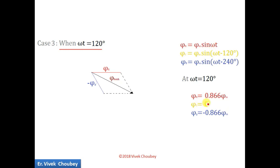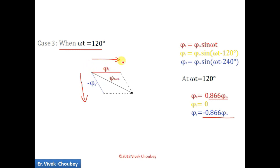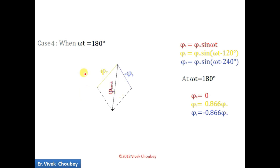Now at ωt = 120°: φR = 0.866φm, so φR is positive in its direction. φY = 0, so it does not appear. φB = −0.866φm — putting ωt = 120° gives φB equal to minus 0.866φm, so φB is in the negative direction. We again vectorially add φR and φB, and the resultant flux is now in this new direction.